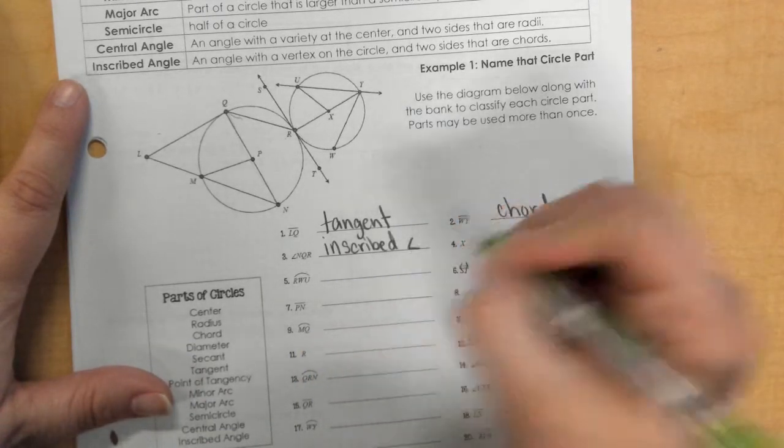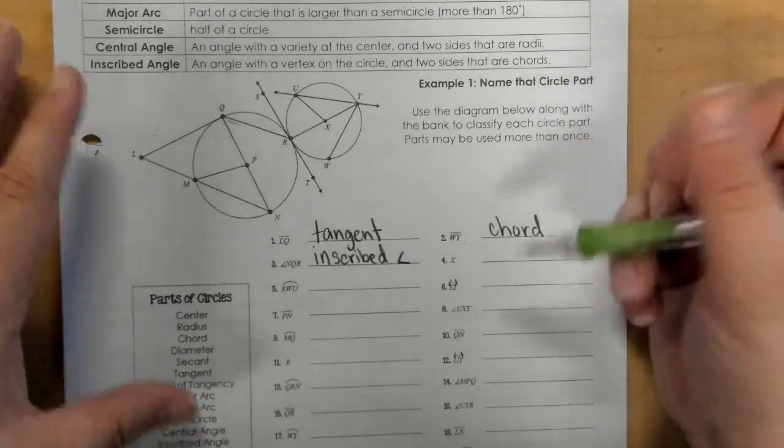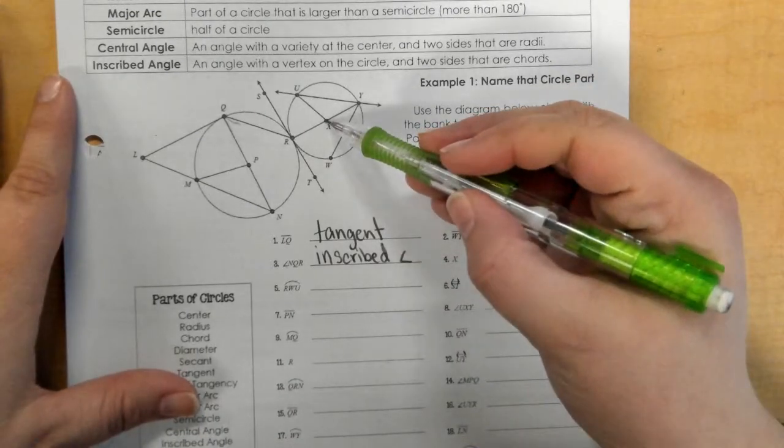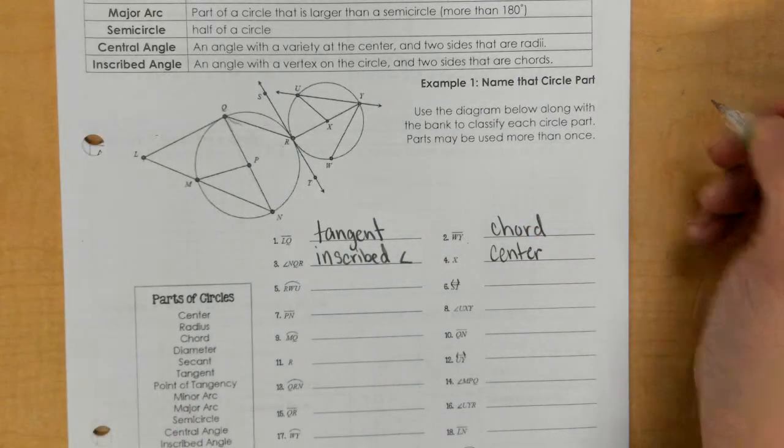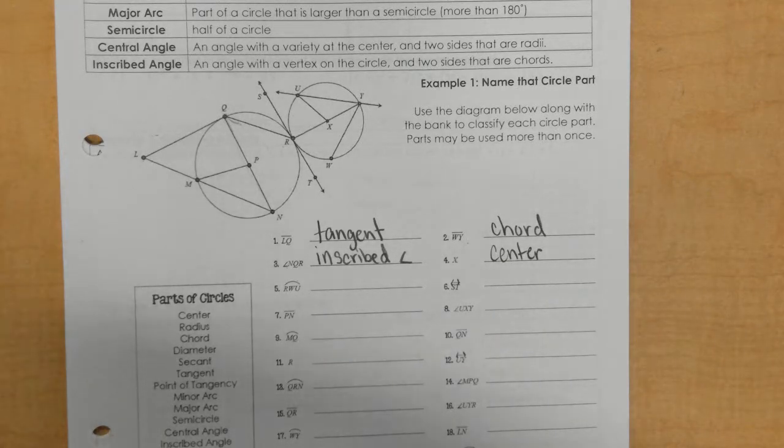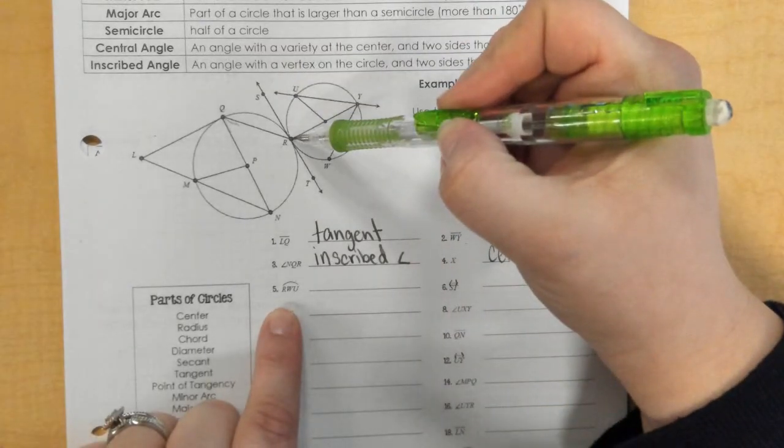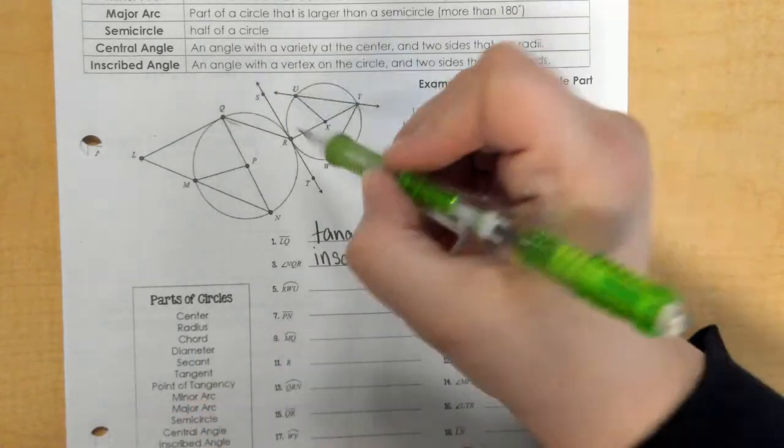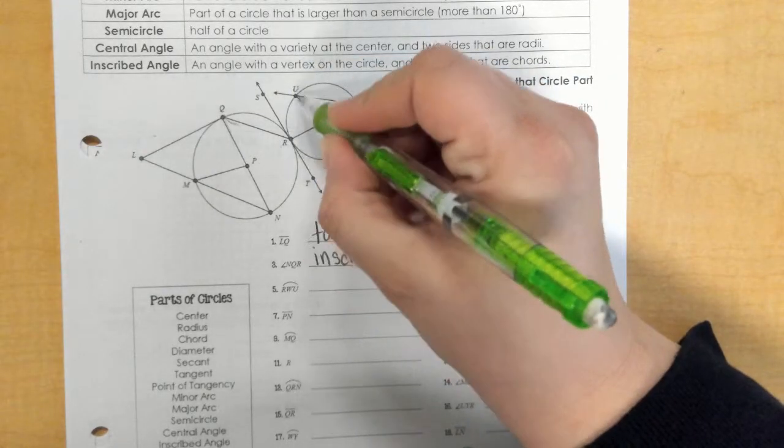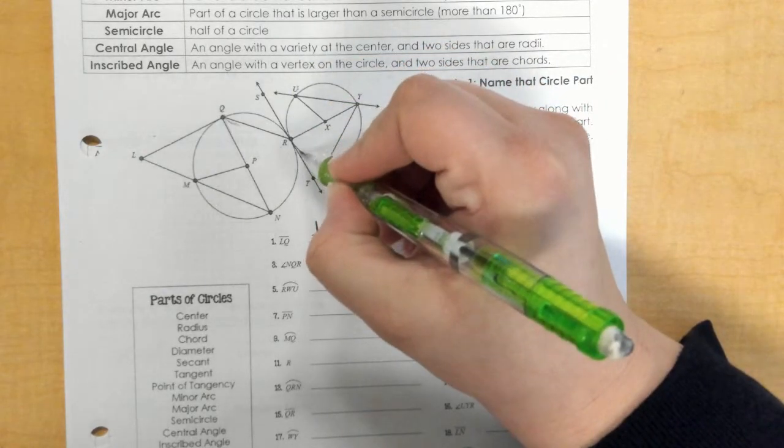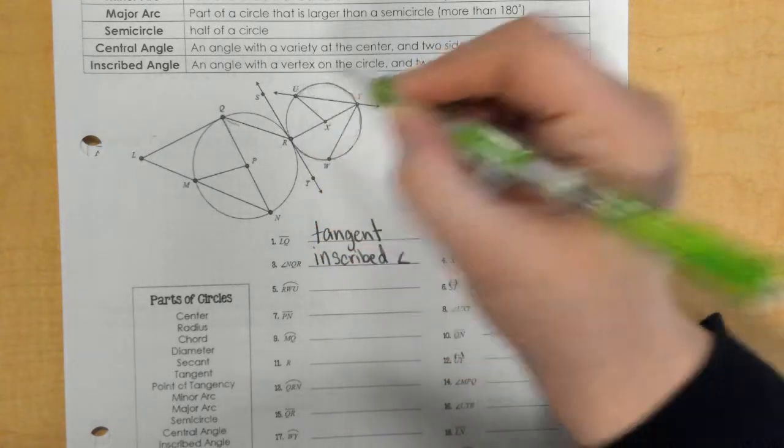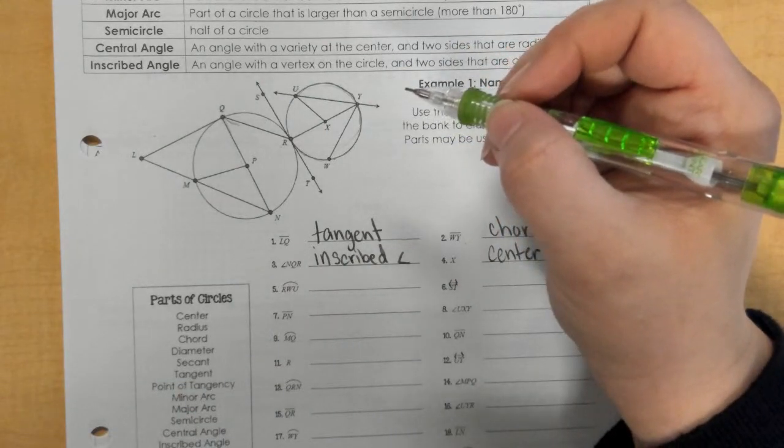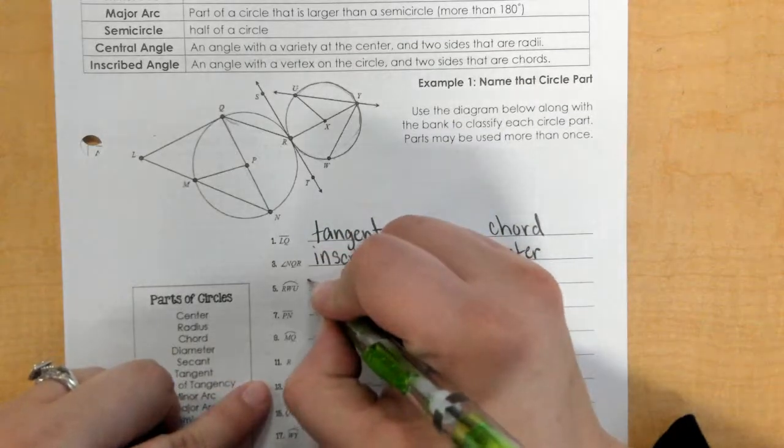And we can just do the angle symbol. For number four, point X is the center of that smaller circle, so we'll just say center. In number five we have an arc. Okay, so an arc, RWU. So the arc is if you were to lay a piece of string from here to here, you would lay it on this curved part of the circle. Okay, so that's a pretty big arc and we know that's more than 180 degrees.